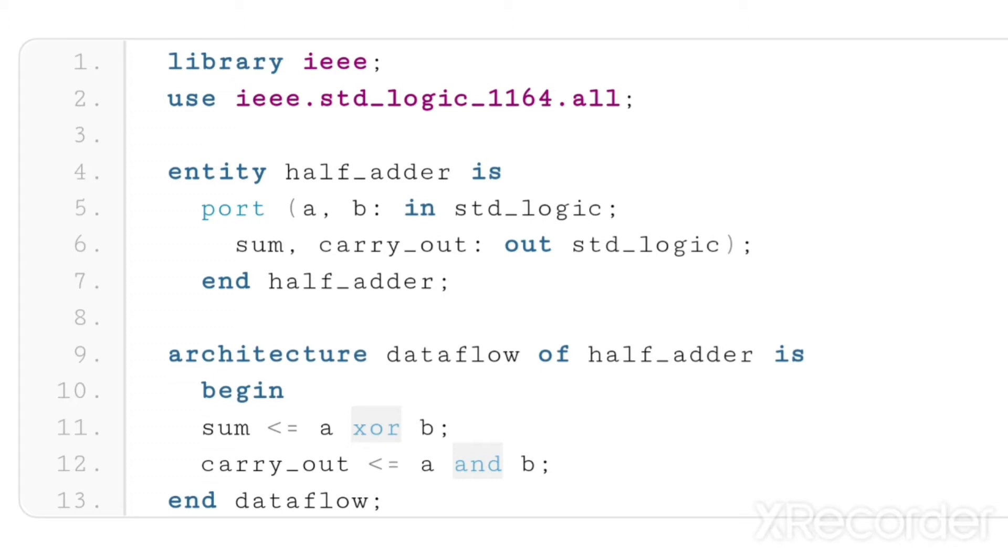The entity block consists of the input and output ports of the design. The architecture block contains the logic of how the design actually works.